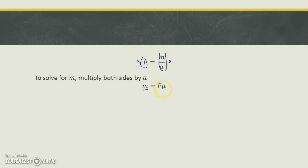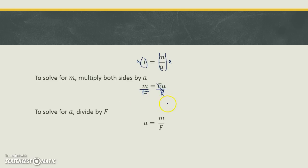What if I wanted to get this equation and solve for a by itself? Well, we've got to get rid of the f. In this case, f is being multiplied by a. So to get rid of that, we do the opposite and we're going to divide by f. If we divide by f, it cancels here and it cancels here, and we're left with a is equal to m over f.